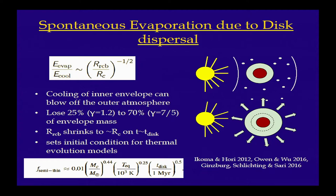You can calculate what the typical envelope fraction should be given a core mass and distance from the star after this dispersal phase — this sets the true initial condition for thermal evolution models. Because the planet loses these outer regions, the remaining envelope can contract rapidly; you get rid of energy by mass loss. The planet shrinks on a few million year timescale to radii comparable to the core radius, becoming relatively small much more quickly than if you ignored this dispersal phase.